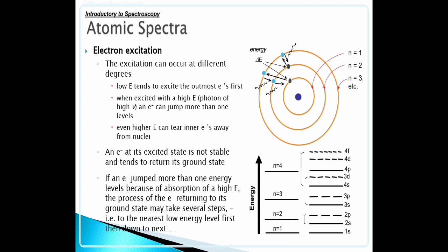If an electron jumped more than one energy level because of absorption of energy E, the process of returning to its ground state may take several steps to the nearest low energy level first, then down to the next.